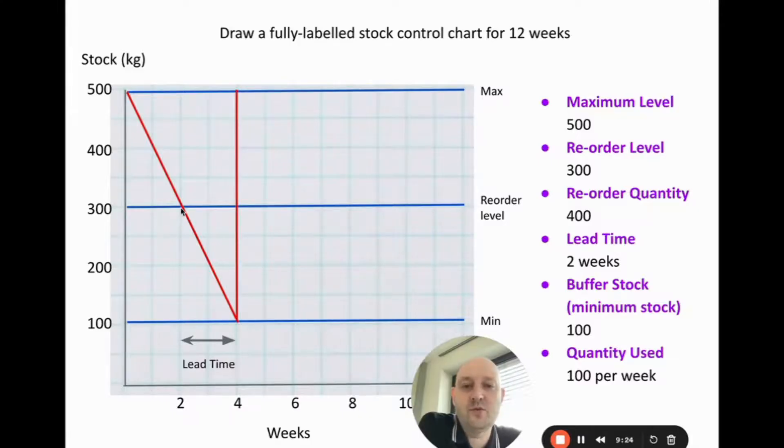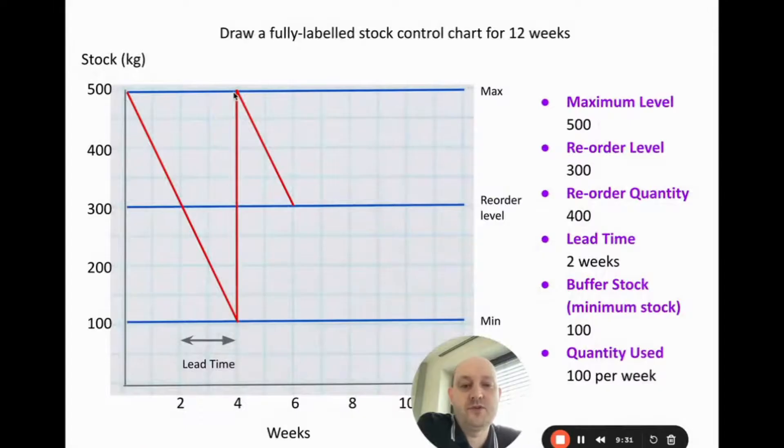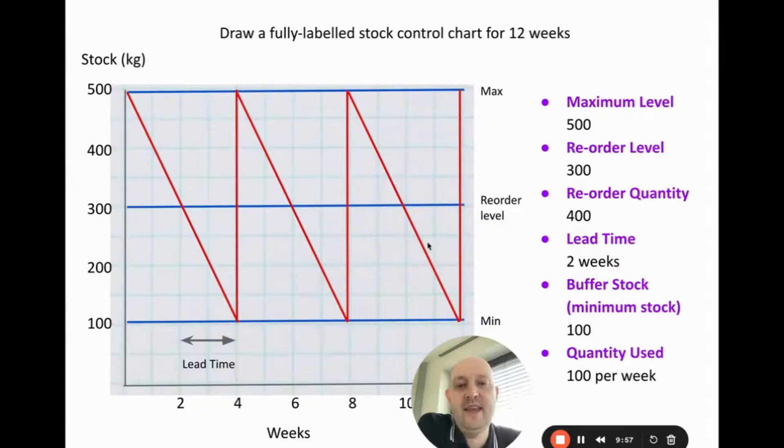You can see that whilst we're waiting for the stock, the stock continues to go down and then goes back up to the maximum. And then what happens is we just repeat the cycle. We're up to 500, we use 100 per week. In the sixth week we go down to 300, and again that triggers the reorder. But the lead time is two weeks, so we have to wait until the eighth week for stock to be delivered. Then we go down to the eighth week, the order arrives, we get 400, and we go back up to the maximum stock level of 500. You can see that the cycle just repeats itself in this diagram.